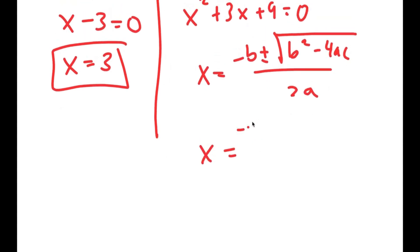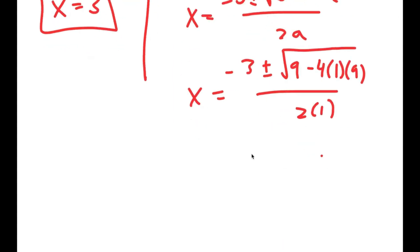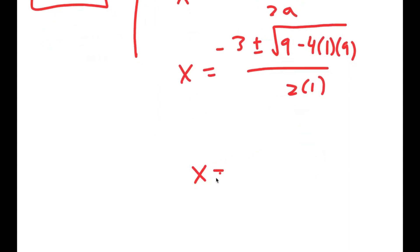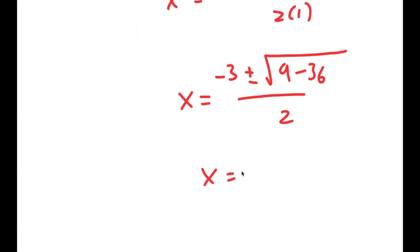So this turns into negative 3 plus or minus the square root of 3 squared — which is 9 — minus 4 times a, which is 1, times c, which is 9, all over 2a, so 2 times 1. And this turns into negative 3 plus or minus the square root of 9 minus 36 over 2, which is equal to negative 3 plus or minus the square root of negative 27 over 2.